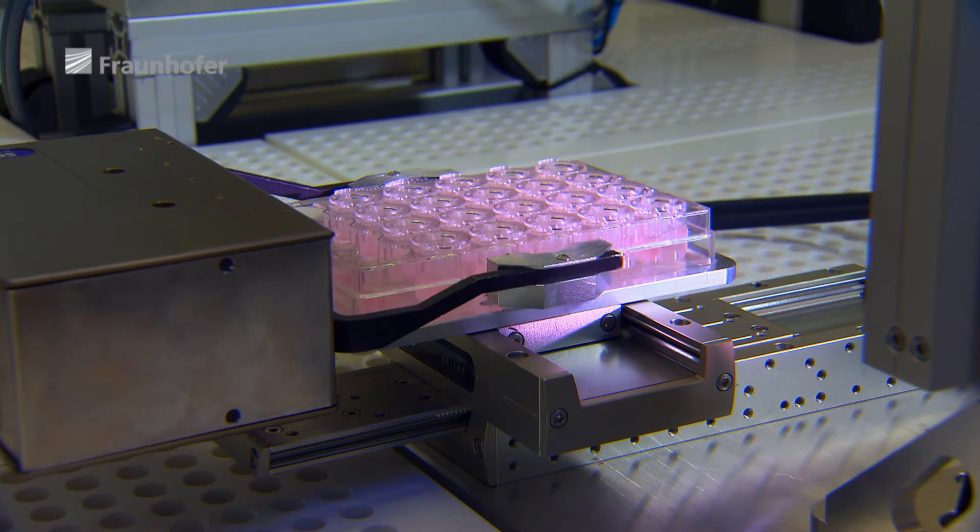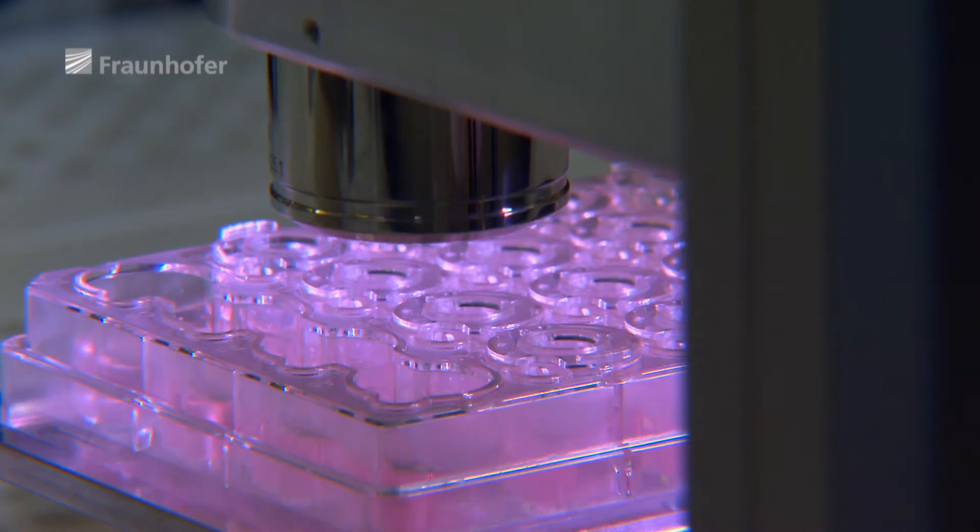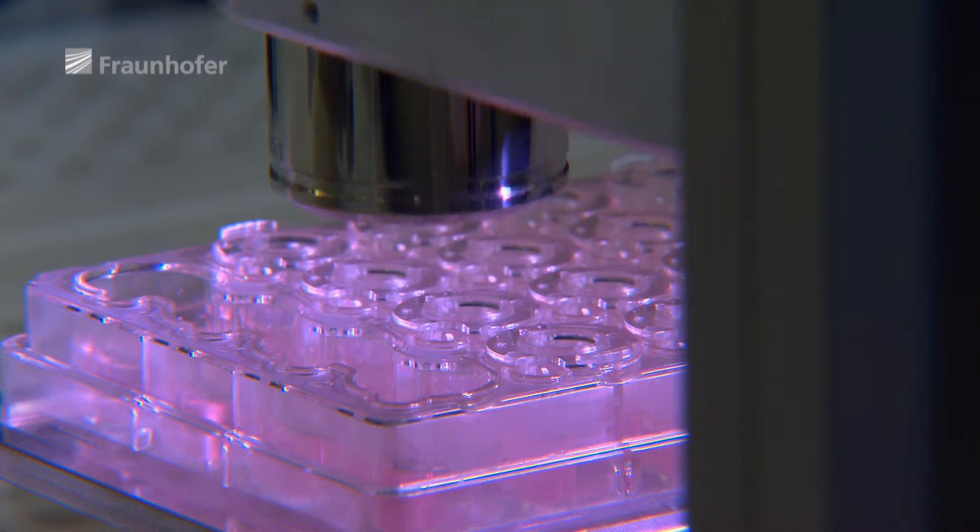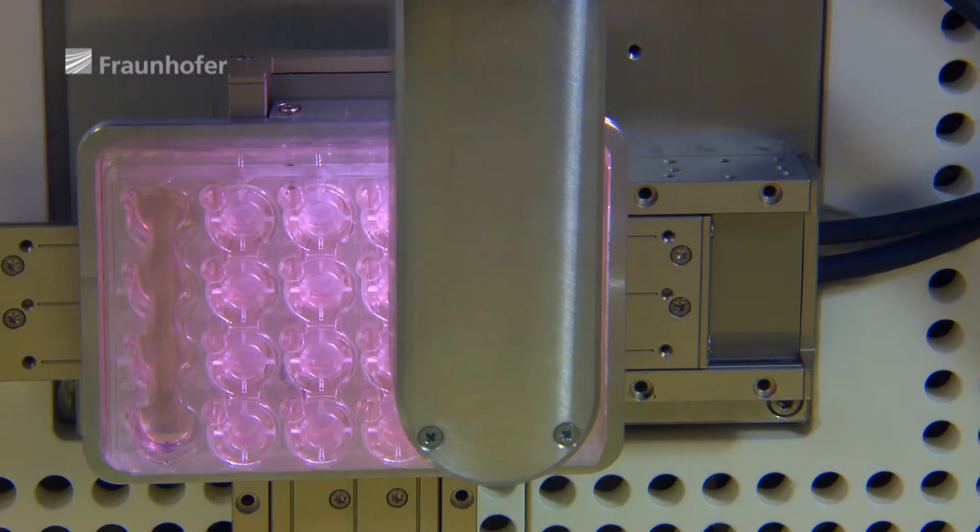At the end, each of the 24 virtually transparent pieces of skin in the dishes has undergone a fully automatic quality control process. Even when it was just a prototype, the system met all the hygienic standards of good manufacturing practices.